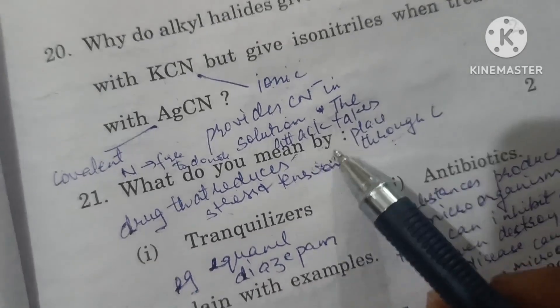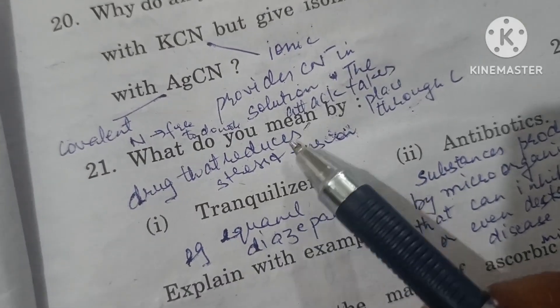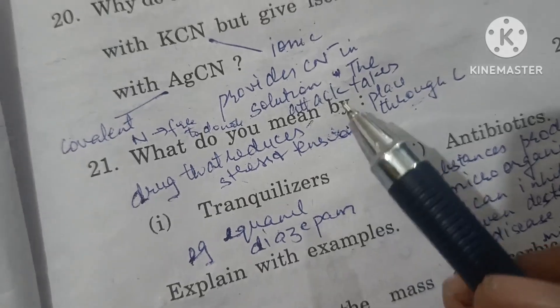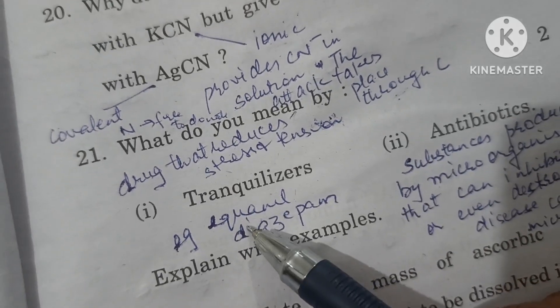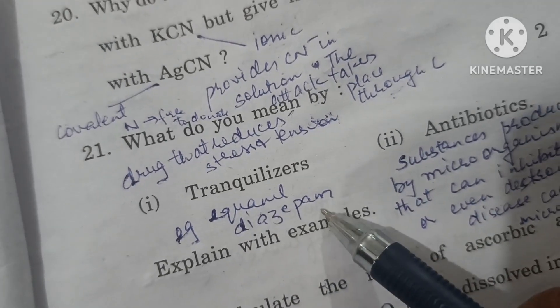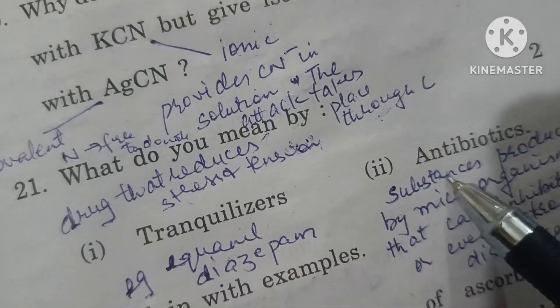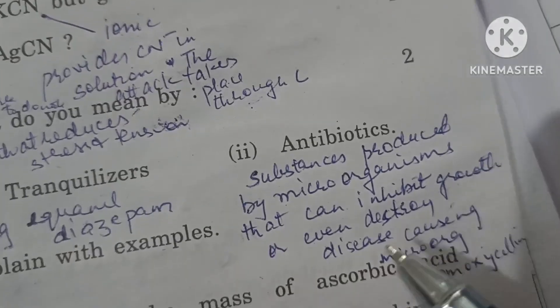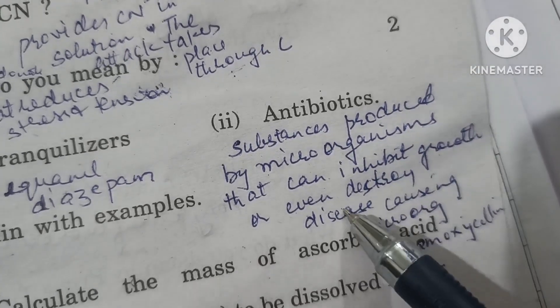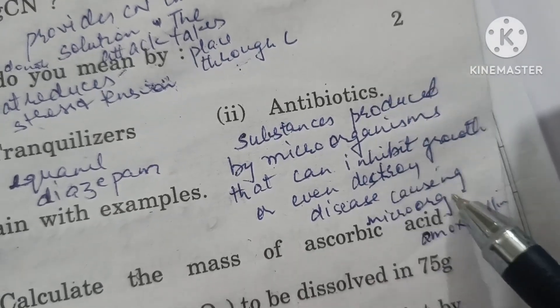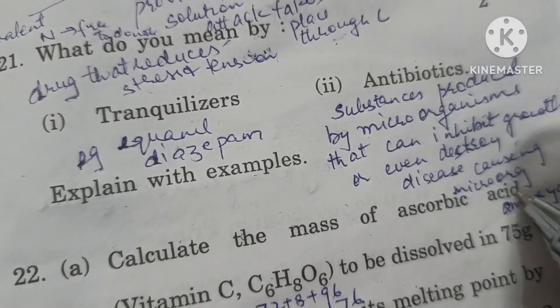What do you mean by tranquilizers? Drugs that reduce stress and tension are called tranquilizers, for example equanil and diazepam. Antibiotics are substances produced by microorganisms that can inhibit growth or destroy disease-causing microorganisms, for example chloramphenicol or amoxicillin.